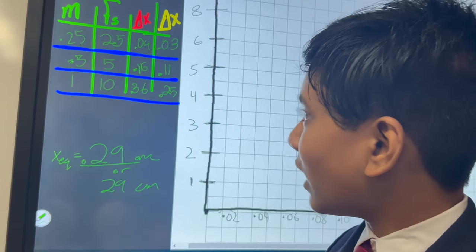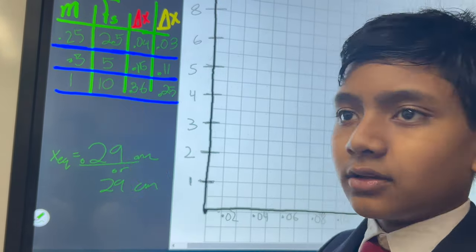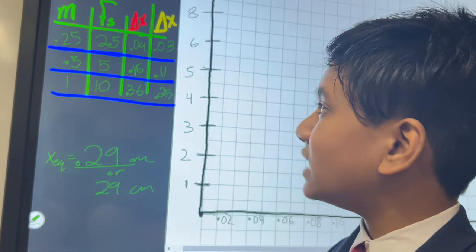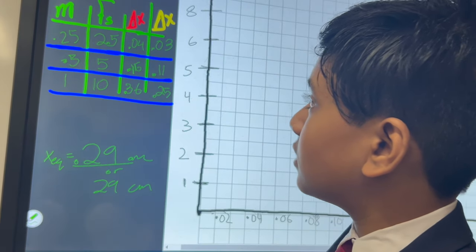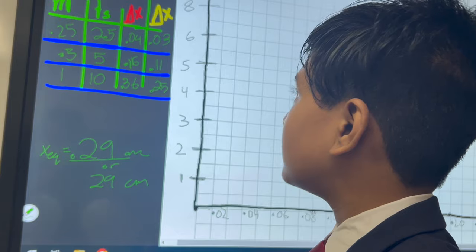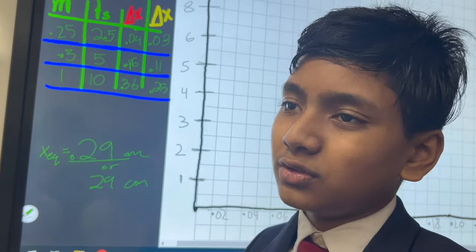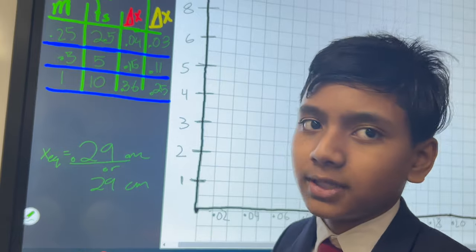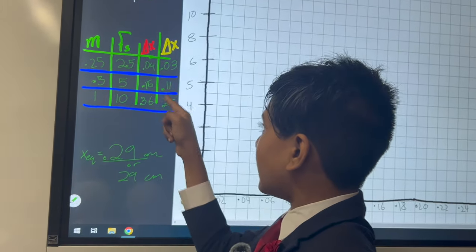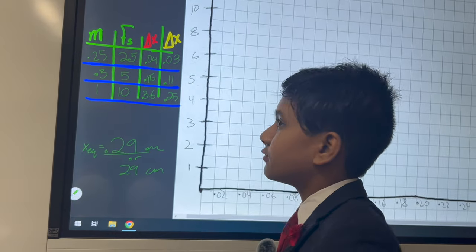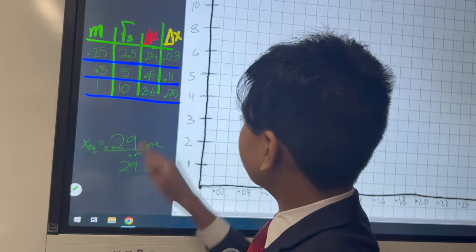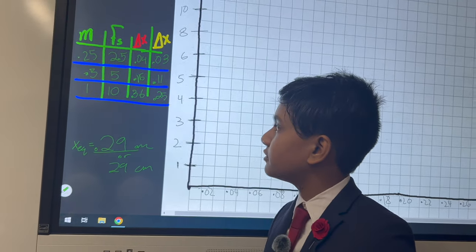When the mass was twice that, and then the corresponding gravitational force and restoring force was twice that, then the amount of displacement of the red spring was 0.16, and the amount of displacement of the yellow-green spring was 0.11 meters. And when we double it again, then the amount of displacement of the red spring is 36 centimeters, and the amount of displacement of the yellow spring is 25 centimeters.